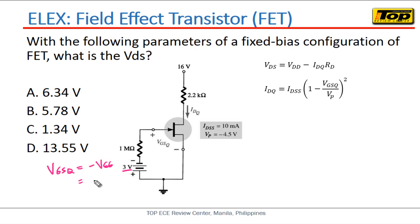Alam natin ano ang value ng VGSQ natin - VGSQ is simply equal to negative VGG, so VGG natin is 3 volts, so this will become negative 3 volts. So nakuha na natin yung VGSQ while VP is already given, that is negative 4.5. Ngayon kung kukunin natin yung IDQ, that will be 10 milliampere multiplied by (1 minus negative 3 volts, that is our VGSQ, over negative 4.5 volts) squared. Pagka-compute natin yan, yung IDQ natin will be 1.1 milliampere.